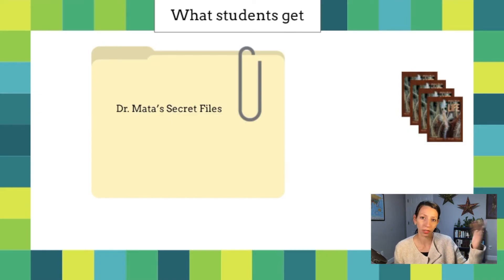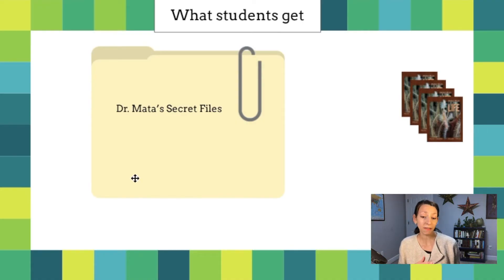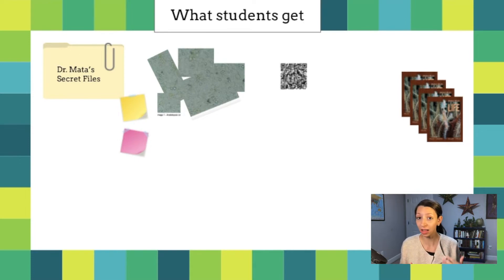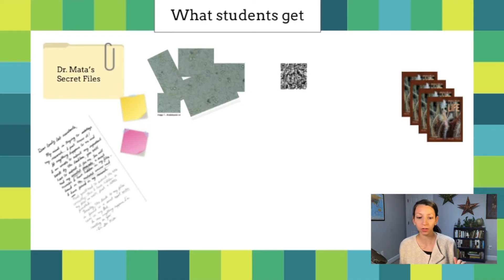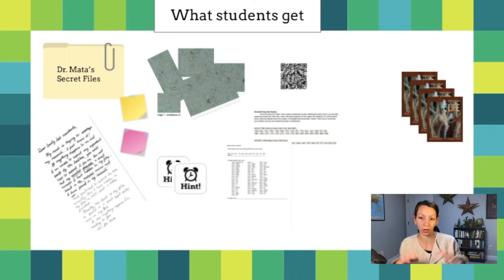At each table, there's a stack of old Principles of Life textbooks accessible as distractor clues, and then students get a file folder that says 'Dr. Mata's Secret Files.' Inside the file folder, the first thing they'll find is a cut-up picture of Arabidopsis stomata. If they put that picture together as a puzzle, on the back there's a QR code leading to one of their first main challenges. There are also sticky notes with handwritten words — some are distractor clues — a handwritten note photocopied from Dr. Mata, two hint cards per table, and sheets with particular tasks to decode.